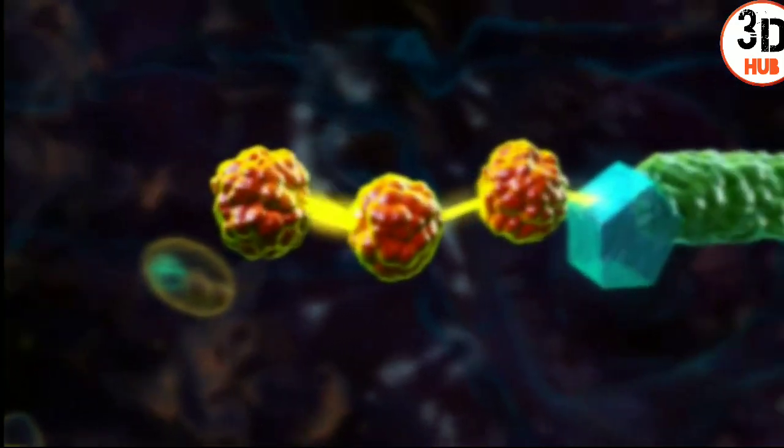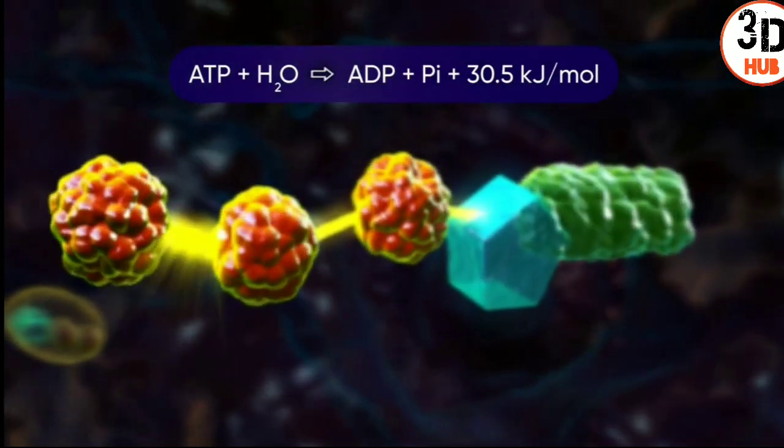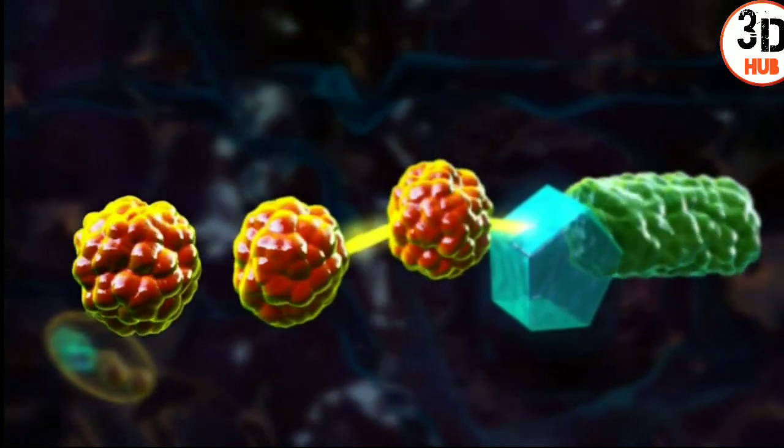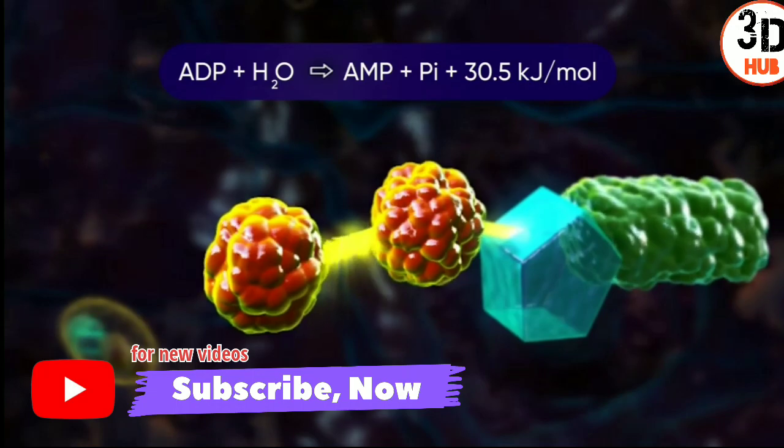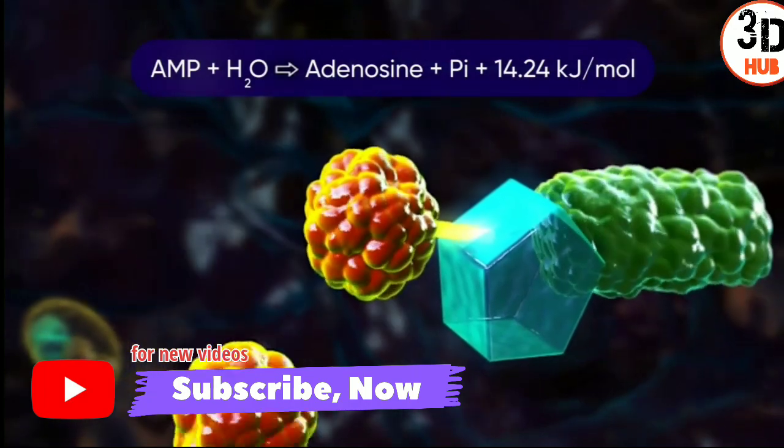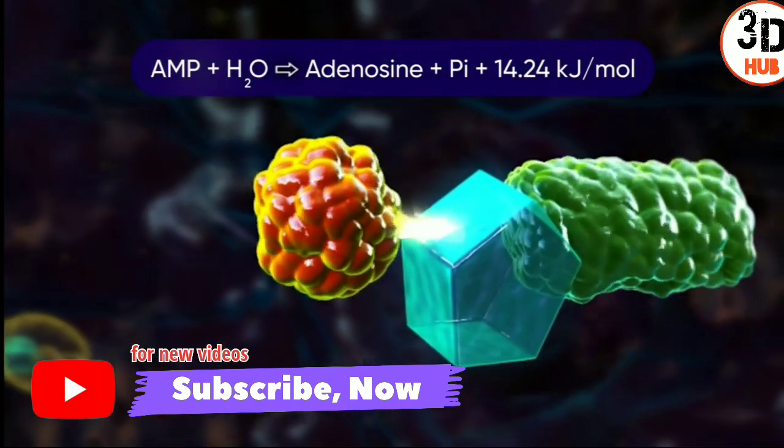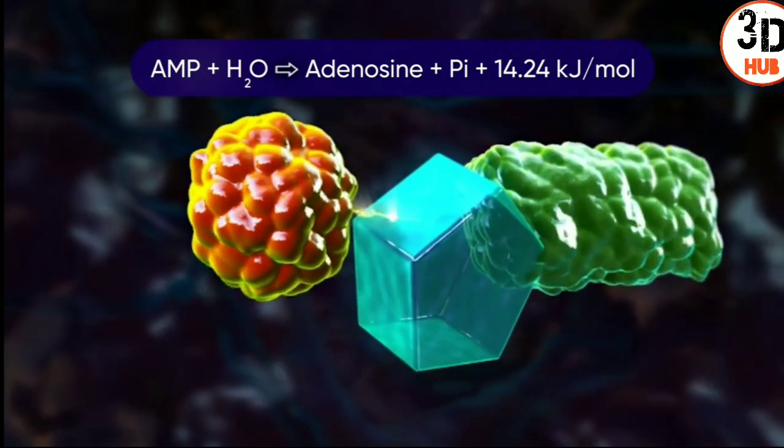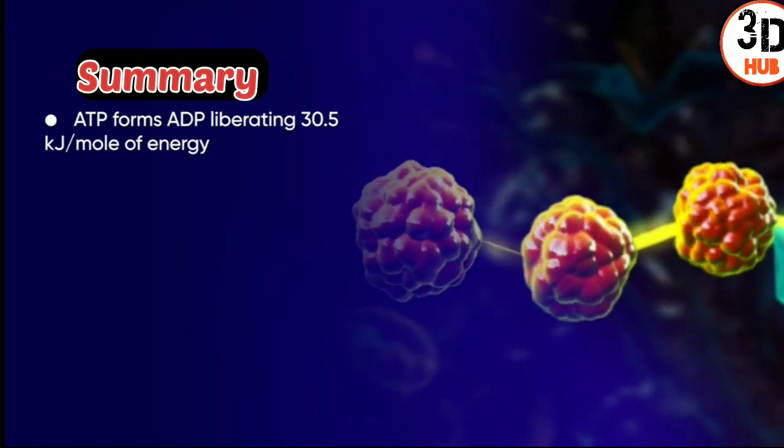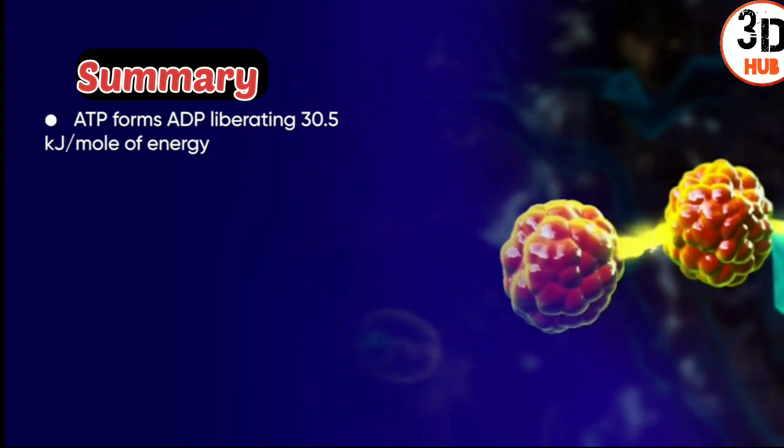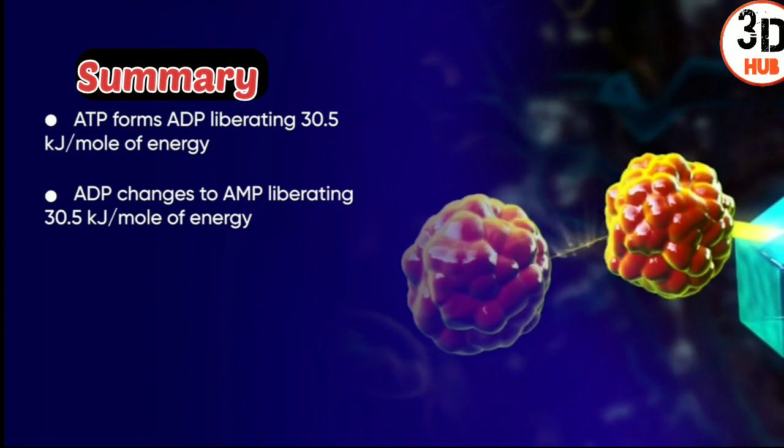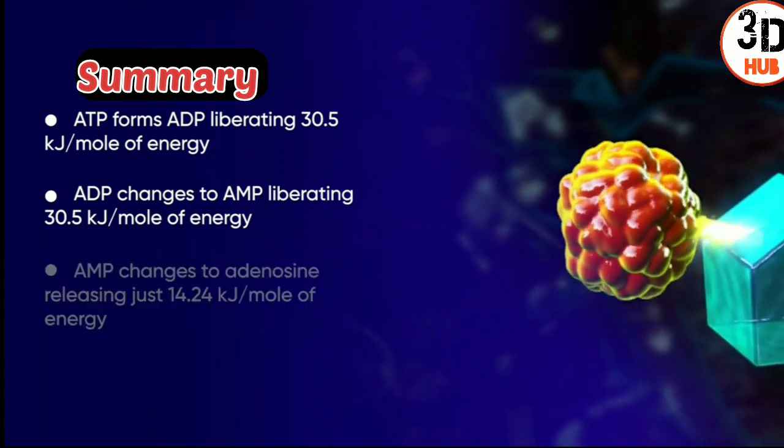Summary: ATP forms ADP liberating 30.5 kilojoules per mole of energy. ADP changes to AMP liberating 30.5 kilojoules per mole of energy.